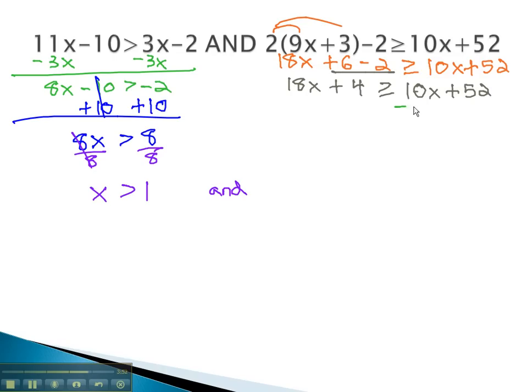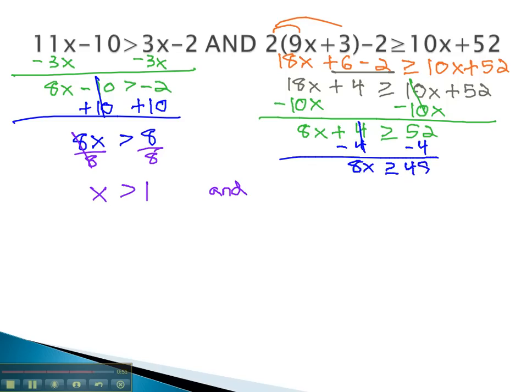Moving the variables to one side, we subtract 10x. 8x plus 4 is greater than or equal to 52. And finally, we subtract 4. 8x is greater than or equal to 48, and divide by 8. X is greater than or equal to 6.